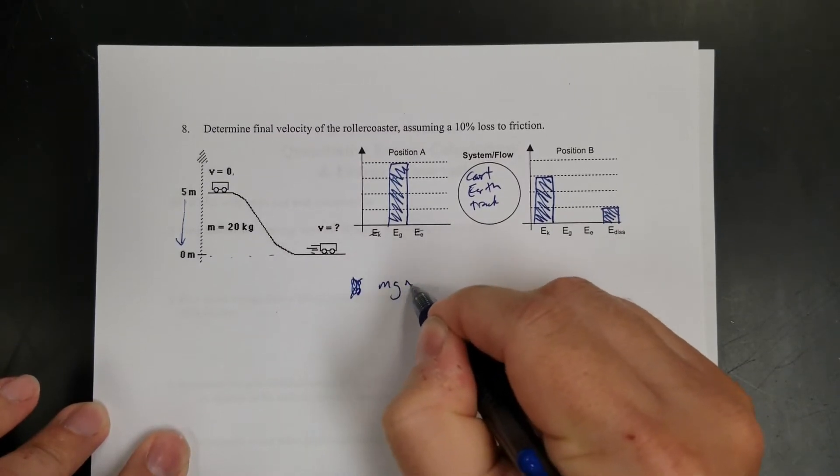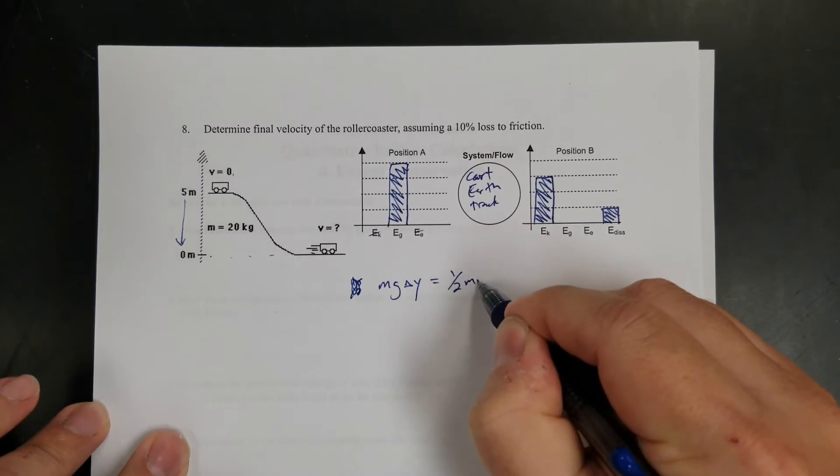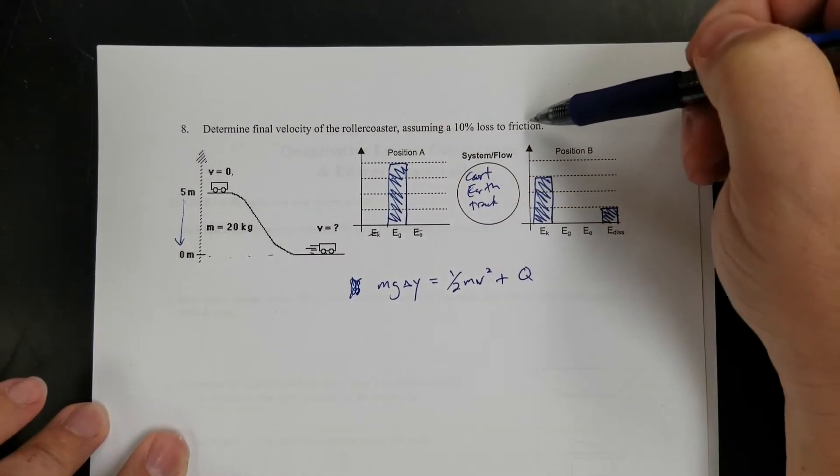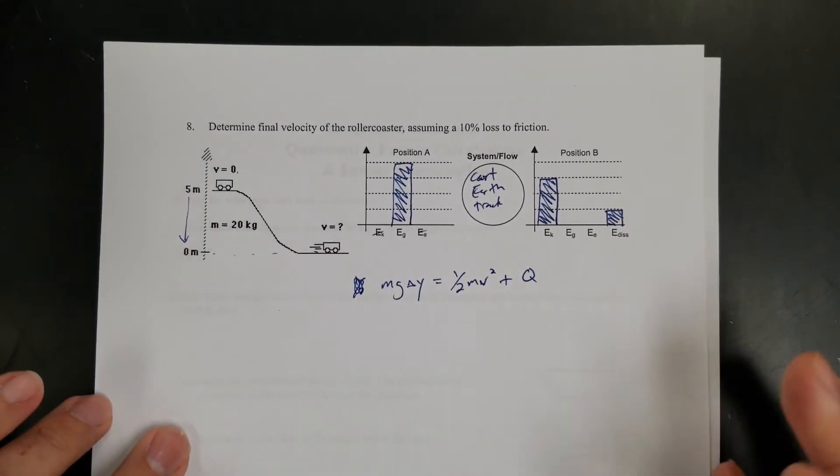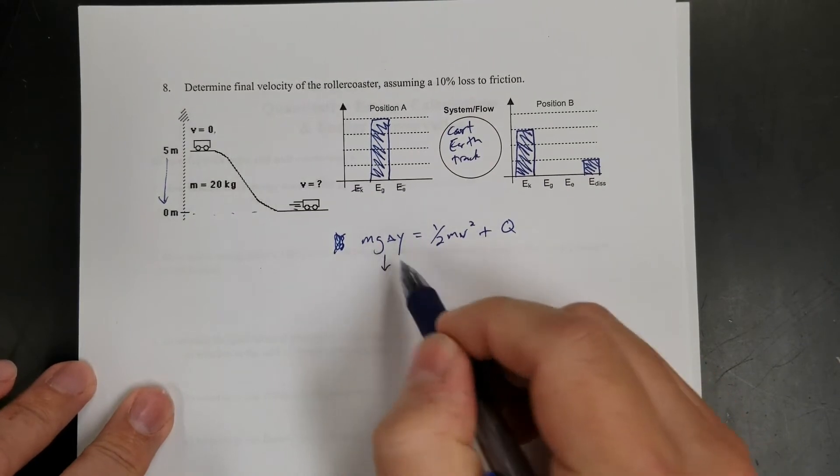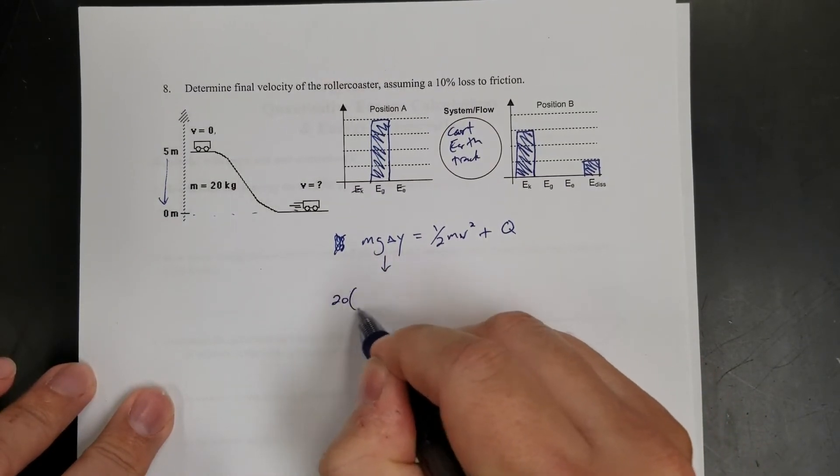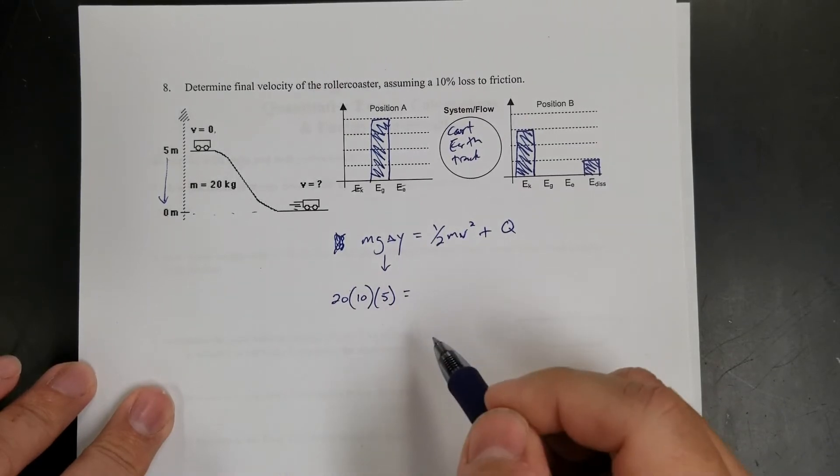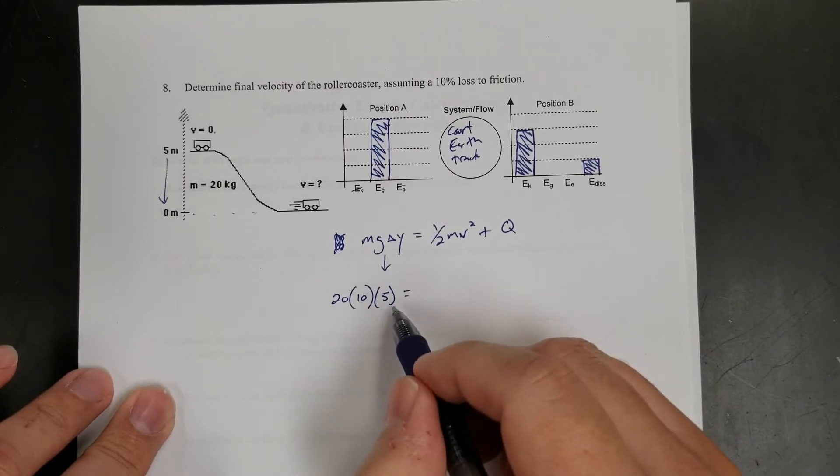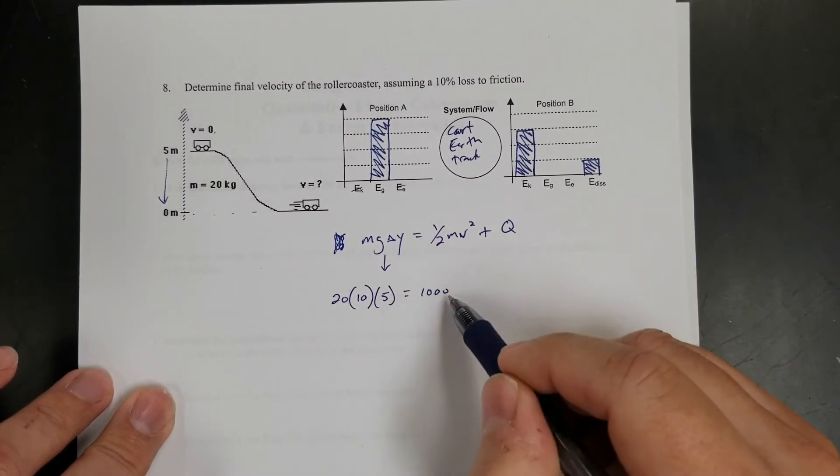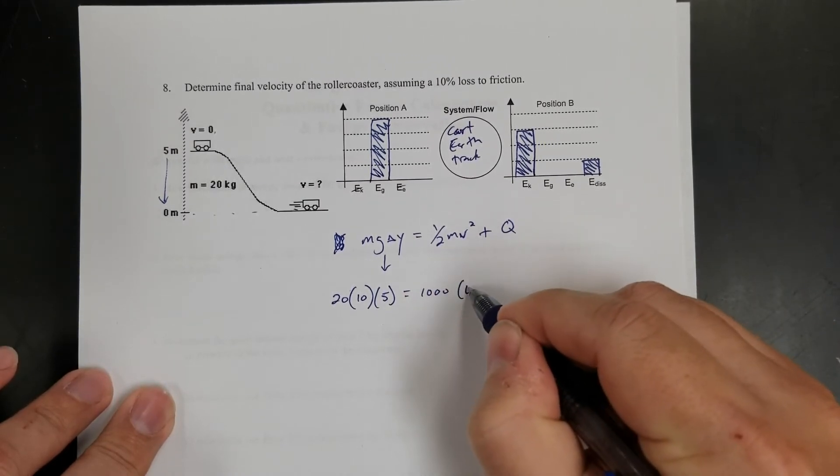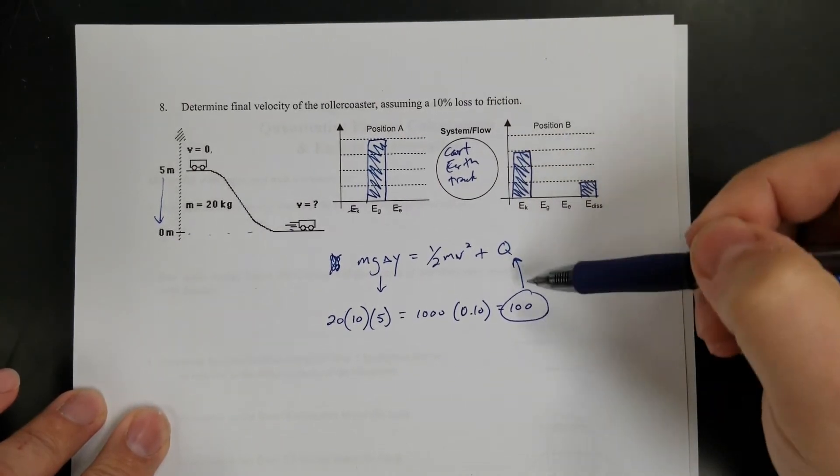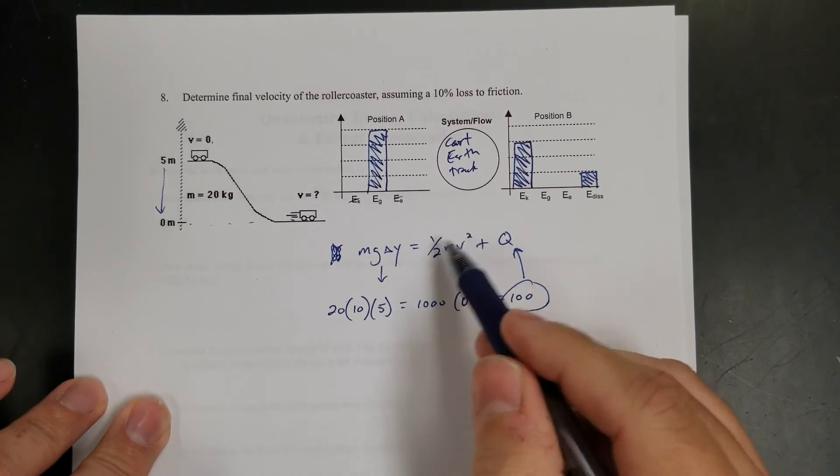All right. So let's make an equation. Gravitational is mg delta y equals 1 half mv squared plus q. Determine the final velocity of the roller coaster, assuming a 10% loss to friction. Okay. So that means it's going to lose 10% of what it started with. So let me figure out what it started with. So the mg delta y is going to be 20, the mass, times 10 for g, times the height is 5. So 20 times 10 is 200, times 5 is 1,000. So 10% of 1,000 is 0.10. That's 100. So 100 is going to be q because I lost 10% of my initial energy to heat. So my initial energy was 1,000, and I end up with something plus 100.